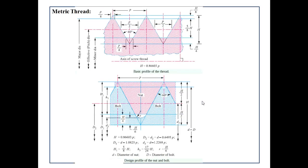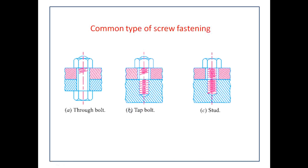Metric threads are the Indian Standard threads, similar to BSW threads but with an included angle of 60 degrees instead of 55 degrees. The basic profile has flat portions at the root and crest instead of the apex. The assembly of nut and bolt is shown, with the major diameter, pitch diameter, and minor diameter present based on various equations. The Indian Standard thread is called the metric thread.